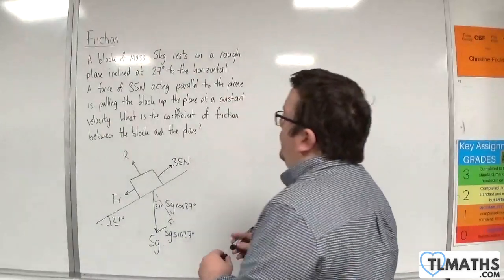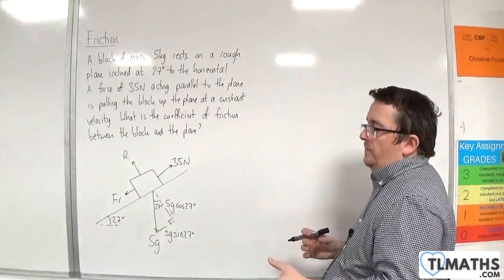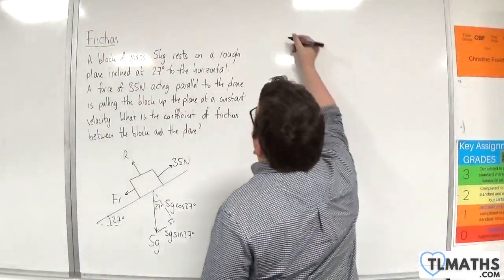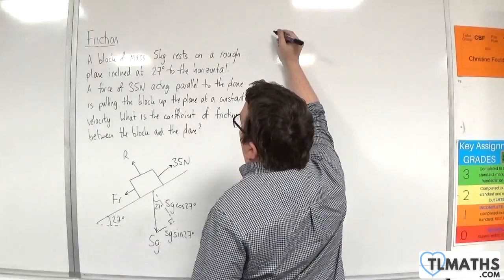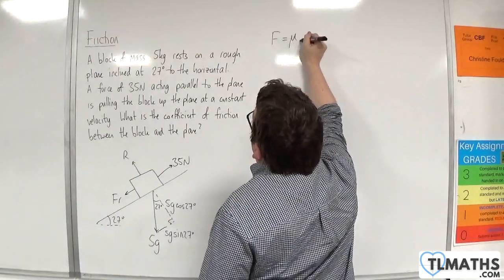We need to find the coefficient of friction between the block and the plane, which means I need the friction and I need the normal reaction force. Because it's moving, we know that f is equal to mu times r.